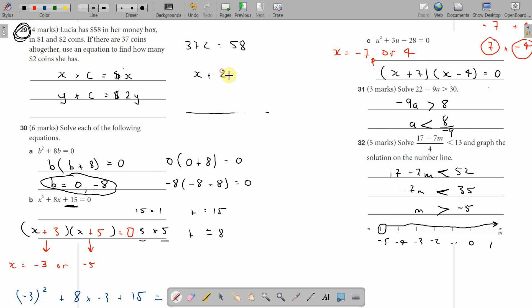So X + 2Y = $58 for the money. The number of $1 coins and twice the number of $2 coins gives us $58. The number of $1 coins plus $2 coins, X + Y = 37 coins. One equation is dollars, one is coins.